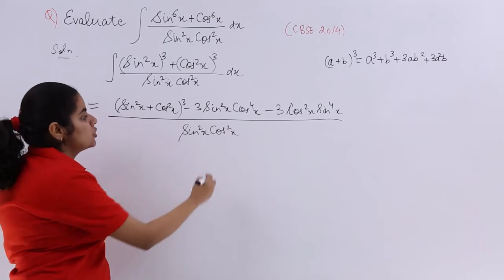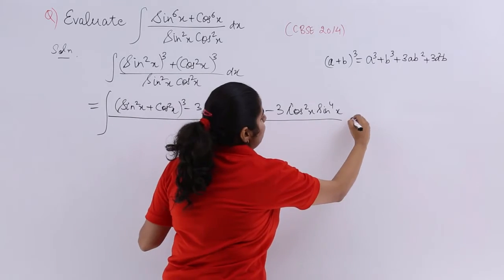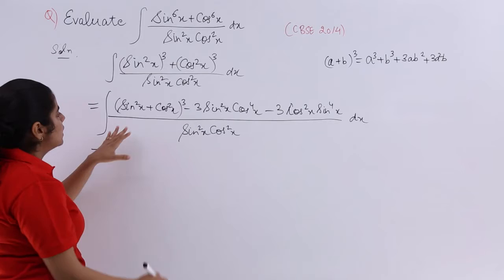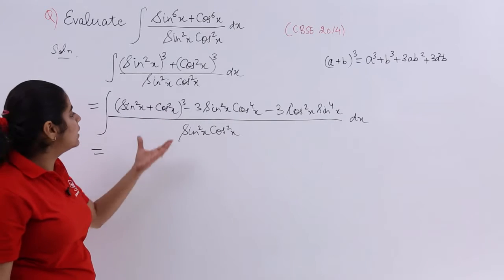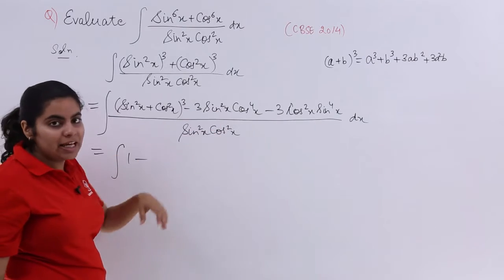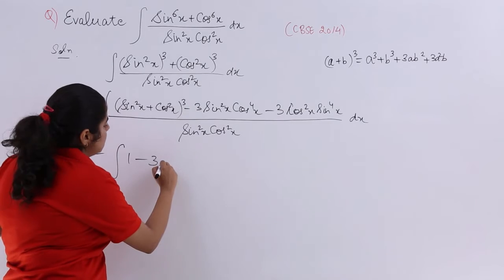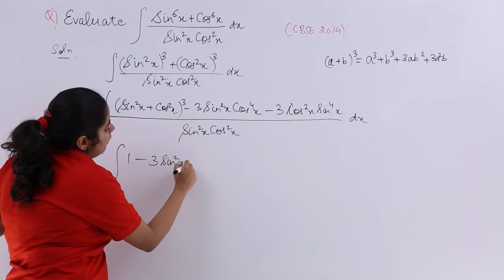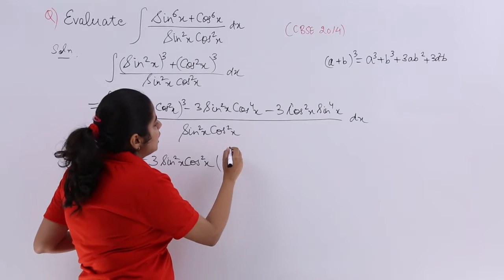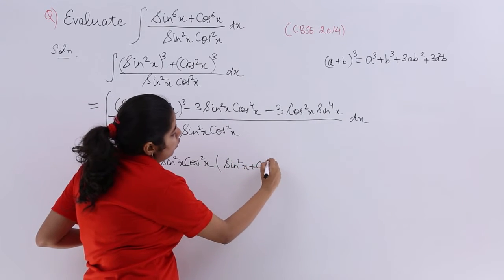What does not change? The idea that integration has to be done with respect to x does not change. Now let's move forward. Sin square x plus cos square x is equal to 1. 1 cube is 1 minus 3 can be taken out as common. Sin square x cos square x can be taken out as common. Inside you have sin square x plus cos square x.